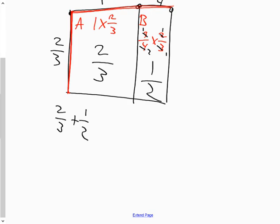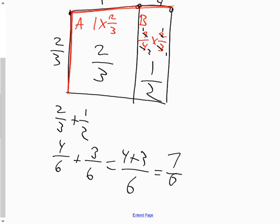And A plus B will equal the total area or two thirds plus one half will equal the total area. What's my common denominator? That's right. It is six. Four sixths plus three sixths. When adding, add your numerators and keep your denominator. My final answer is seven sixths, which is one and one sixth as a mixed fraction.